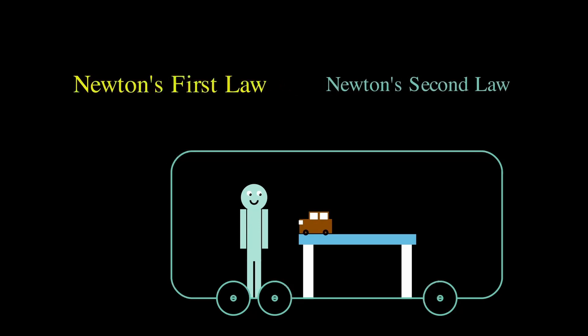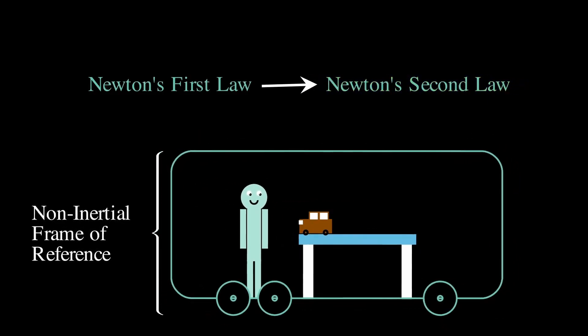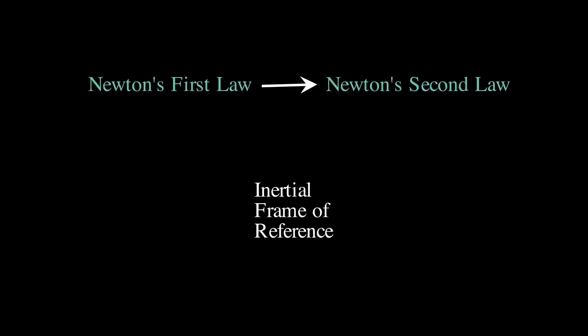So Newton's first law is actually a prerequisite to Newton's second law. And the accelerating bus was what we called a non-inertial frame of reference. So Newton's first law basically defines what is inertial frame of reference. And in that inertial frame of reference, Newton's second law holds true. And this is why we have two different laws.